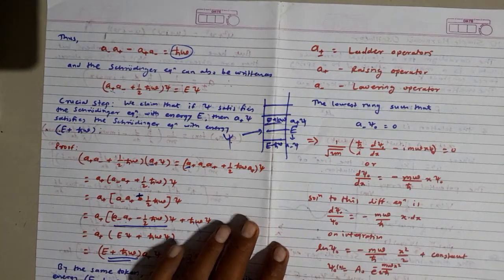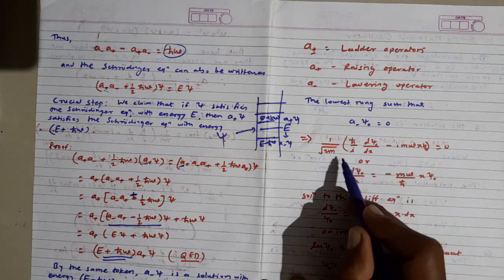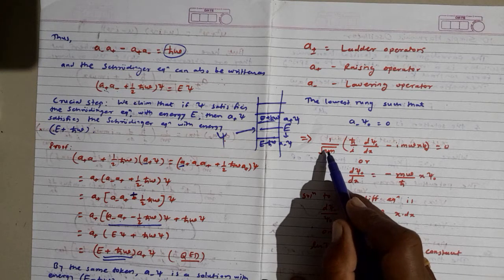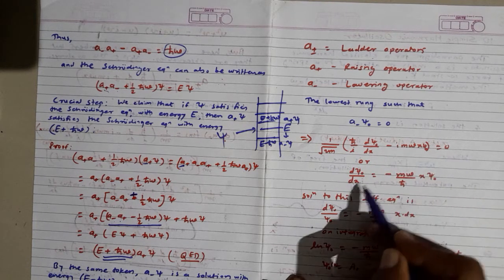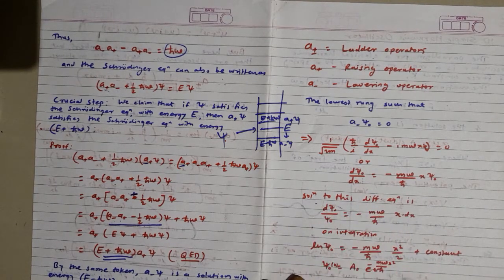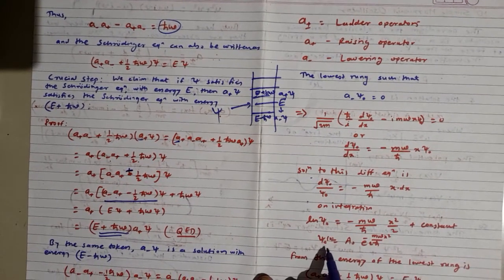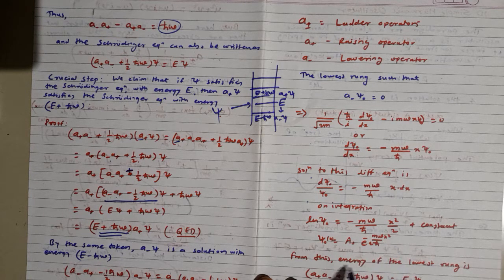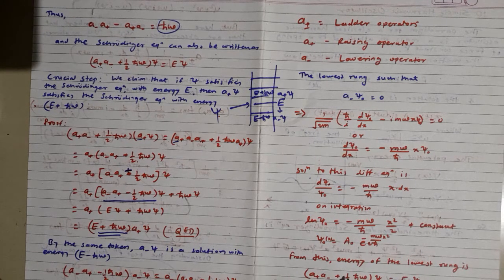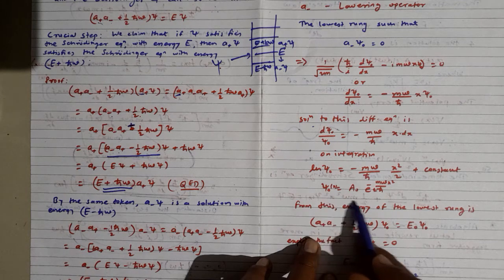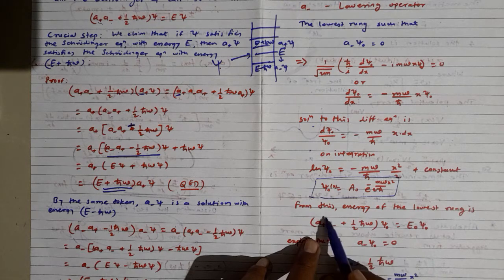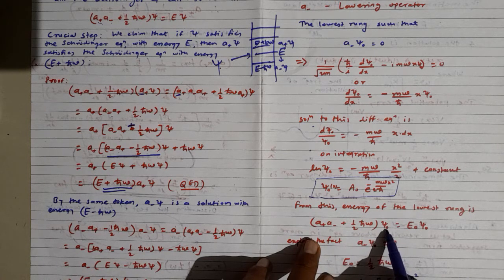We substitute the value of a₋ to find the ground state wave function. The equation (1/√(2m))(ℏ/i · dψ₀/dx - imωx·ψ₀) = 0 rearranges to a first-order differential equation whose solution is ψ₀(x) = A₀ e^(-mω/2ℏ · x²).